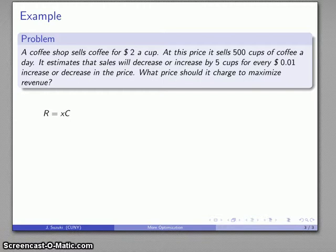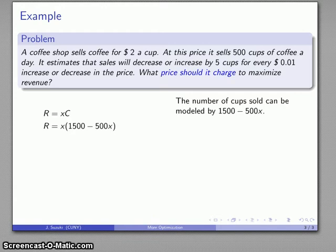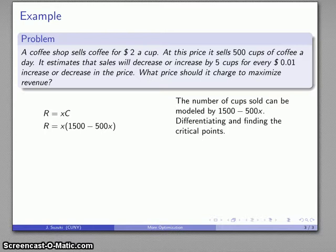I can write the expression that way, and after some effort I can figure out the number of cups sold can be modeled by 1500 minus 500x. So there's my revenue function and I want to differentiate and find the critical points.